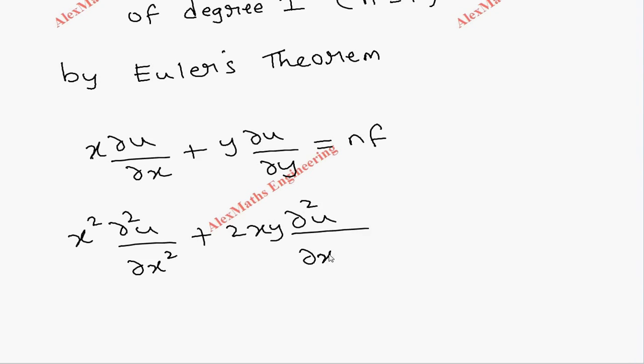This equals n into n minus 1 into u. Here instead of f we can use u because we have already used u in place of the function.